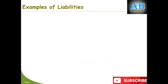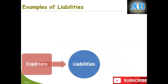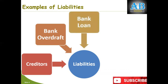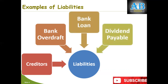Now let's discuss some examples of liabilities. First, creditors — these are the entities from whom you have bought goods on credit. Then we have bank overdraft, which is also a liability — the bank gives you a short-term loan against your current account. Then you have bank loans, which are long-term loans you obtained from the bank; this is a past event against which you are supposed to settle your liability in future. Dividend payable is a liability of the company towards its owners. Then bonds — this is another instrument to get a loan from third parties. There are many other examples of liabilities.